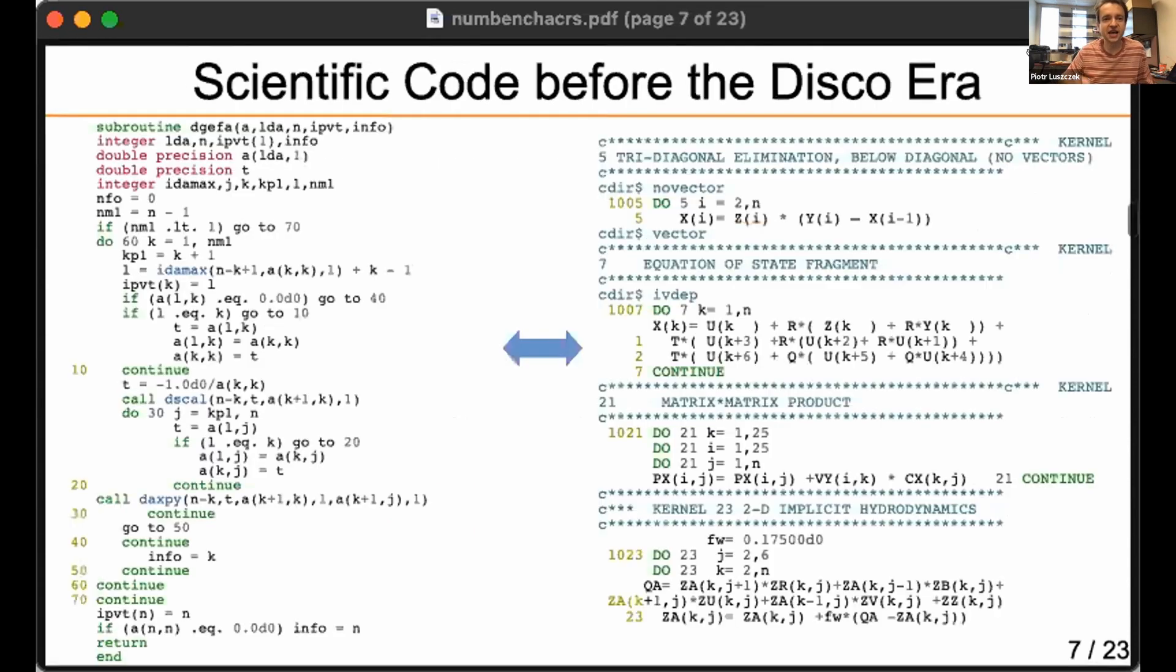Back in the day before disco music was a thing, if you look at the codes, on one side we have a benchmark and on the other we have a piece of application. On the left is the LINPACK version of the LU-based solver, and on the right we have the Livermore loops used for benchmarking. Back in the day these two codes looked the same and performed in a similar fashion.